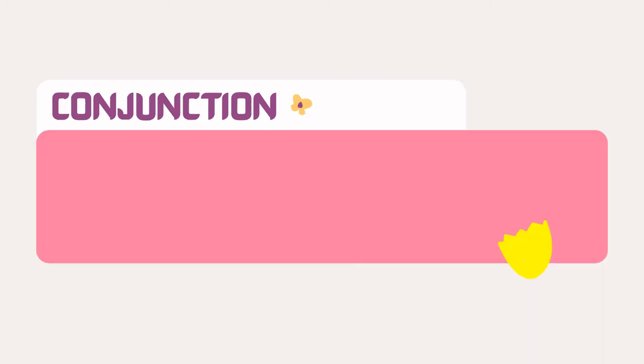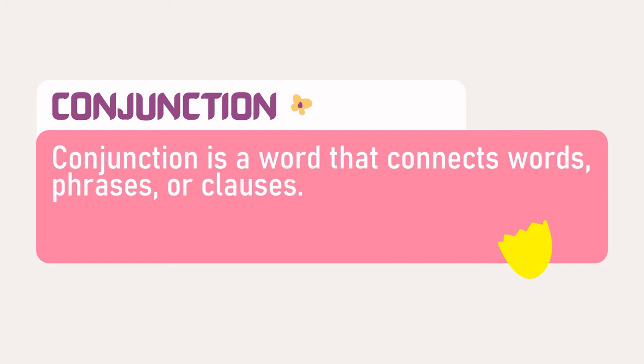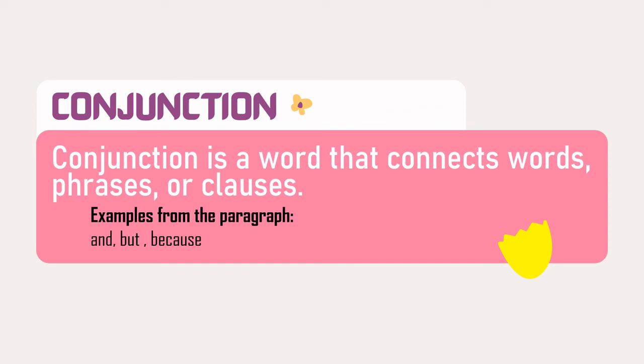Conjunction. A conjunction is a word that connects words, phrases, or clauses. The examples are: and, but, and because.